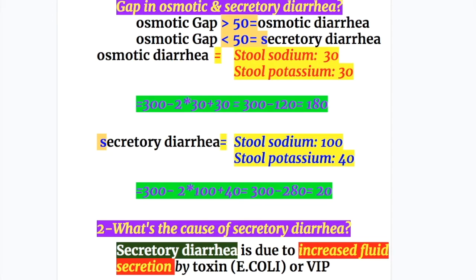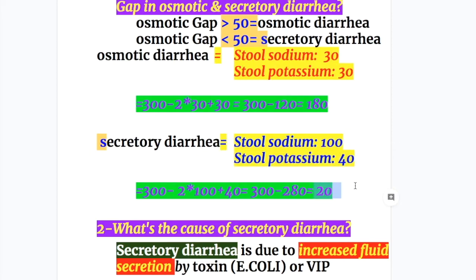Now, answers to the questions. What's the importance of the osmotic gap? Osmotic gap more than 50 in osmotic diarrhea, less than 50 in secretory diarrhea. In osmotic diarrhea, sodium and potassium are 30 each, giving an osmotic gap of 180 — more than 100. In secretory diarrhea, sodium is 100 and potassium is 40, giving an osmotic gap of only 20 — less than 50.